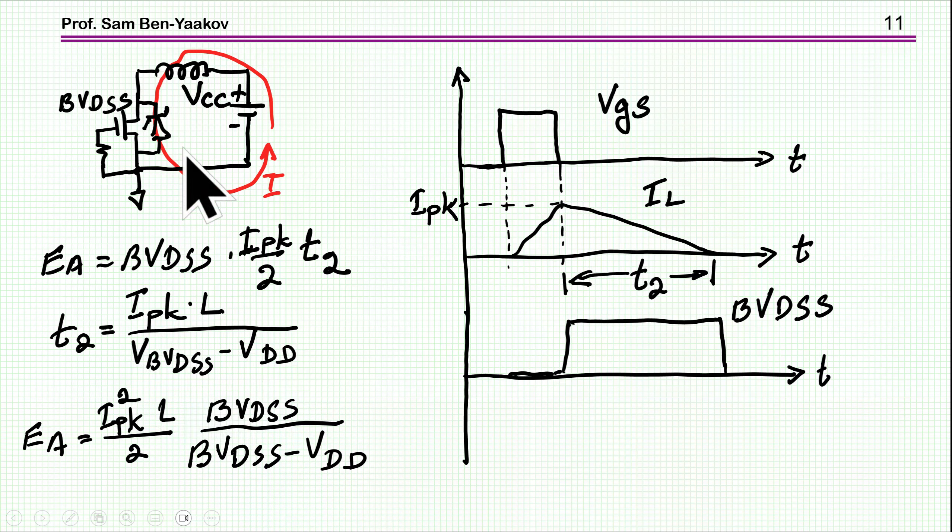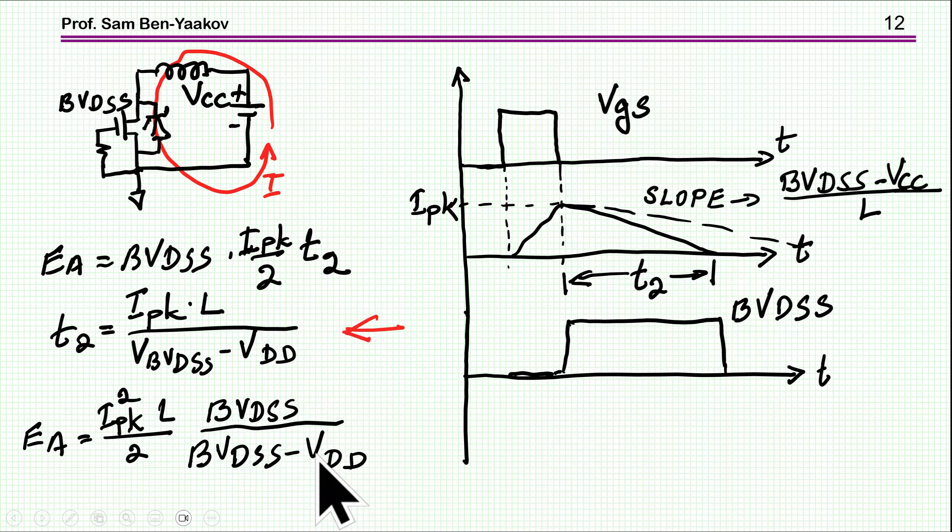The time that it takes for this discharge depends on the inductance I peak and the voltage across the inductor. This is the voltage across the inductor. If I plug this T sub 2 into here, I'm getting this equation that Toshiba is showing. You see that in this equation, you have this difference. And here is the explanation.